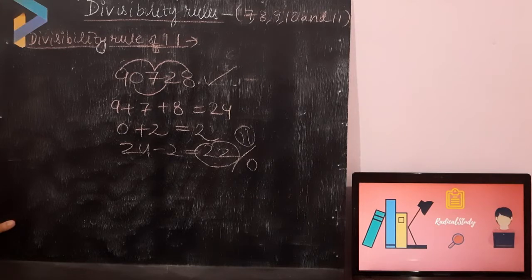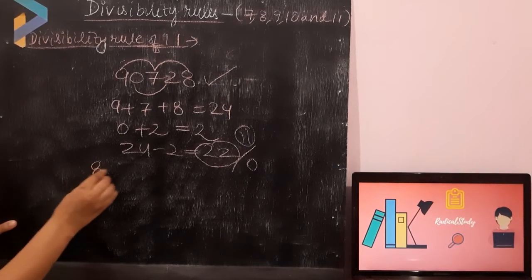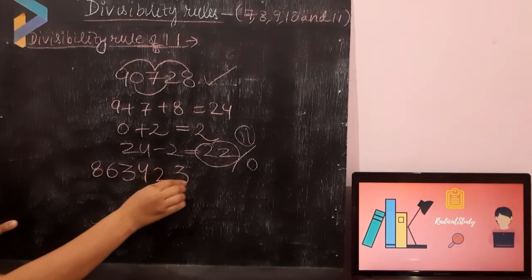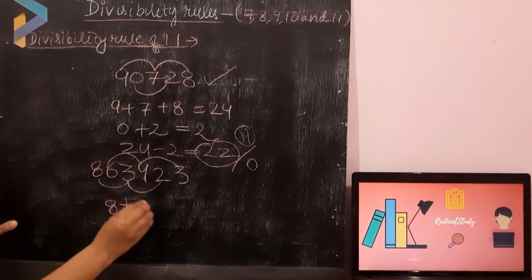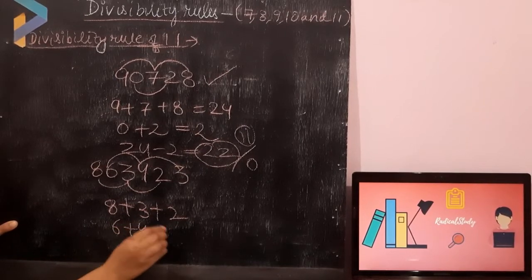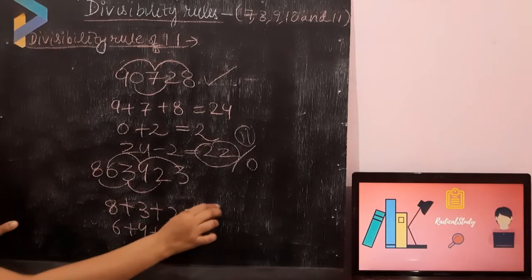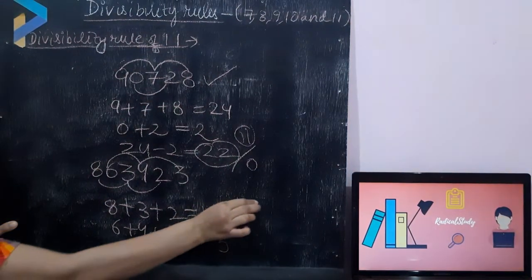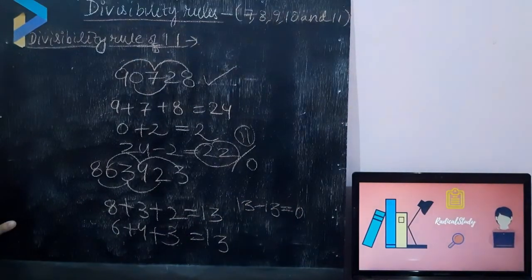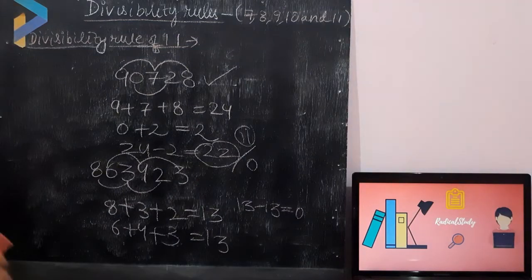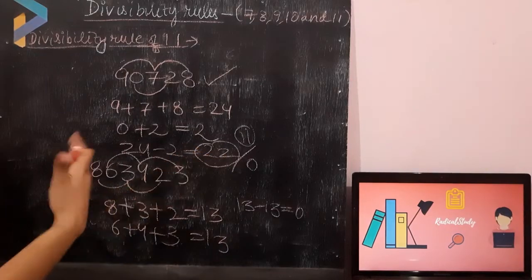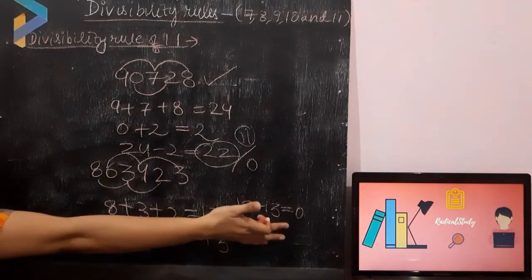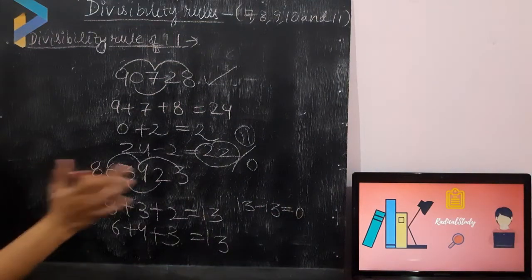Let's take one more example: 863423. Odd places (1, 3, 5): 8 plus 3 plus 2. Even places (2, 4, 6): 6 plus 4 plus 3. That gives 13 and 13. Now 13 minus 13 is 0. Same as with rule 7, the result should be divisible by 11 or equal to 0. Here we got 0, which means this number is divisible by 11.